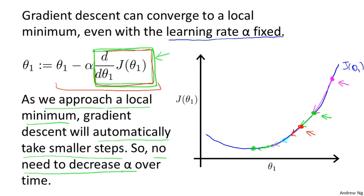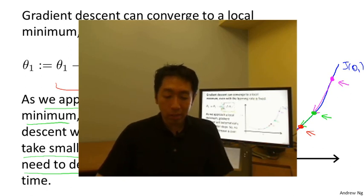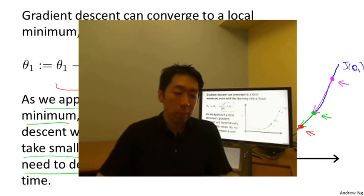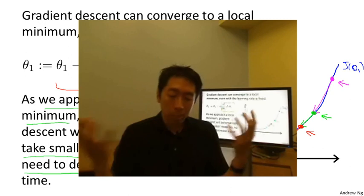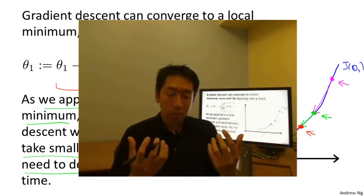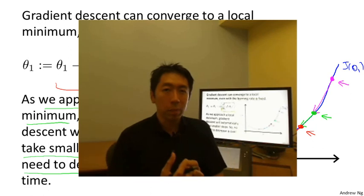So that's the gradient descent algorithm, and you can use it to minimize any cost function j, not just the cost function we defined for linear regression. In the next video, we're going to set j back to be exactly linear regression's squared cost function. Taking gradient descent and the squared cost function together will give us our first learning algorithm — our linear regression algorithm.